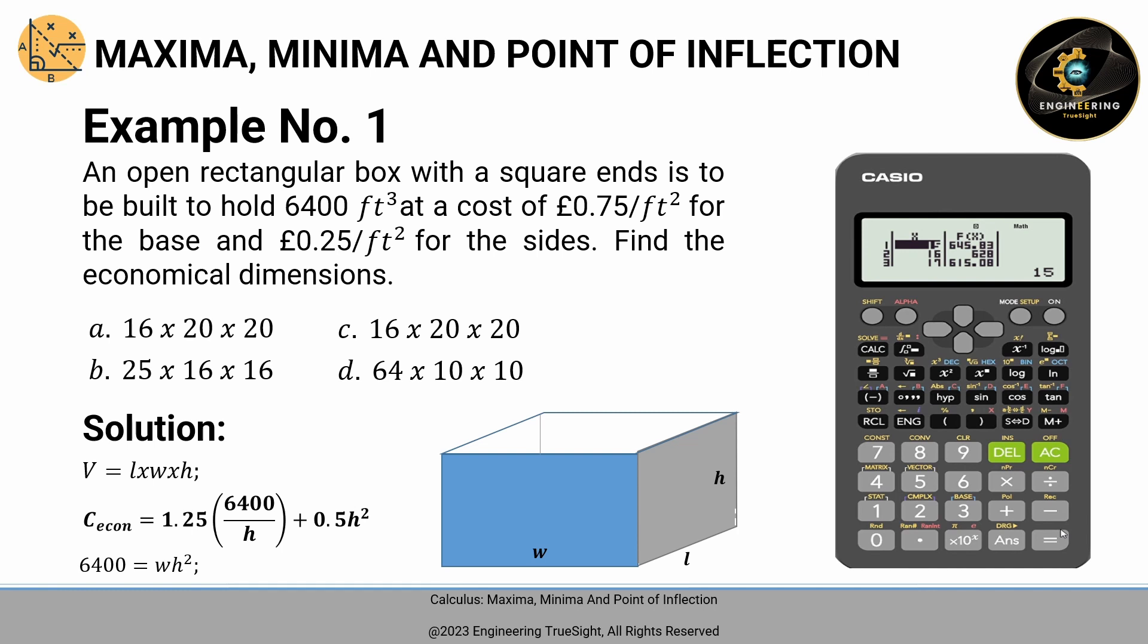We have X column and F of X column. So if the value of your X is 15, we have the value of F of X, 645.83. Now, we take a closer look at F of X because the problem states that the C economical of F of X shall be a minimum value. Meaning, we have to compare all the possible values of F of X. The minimum is the final answer.